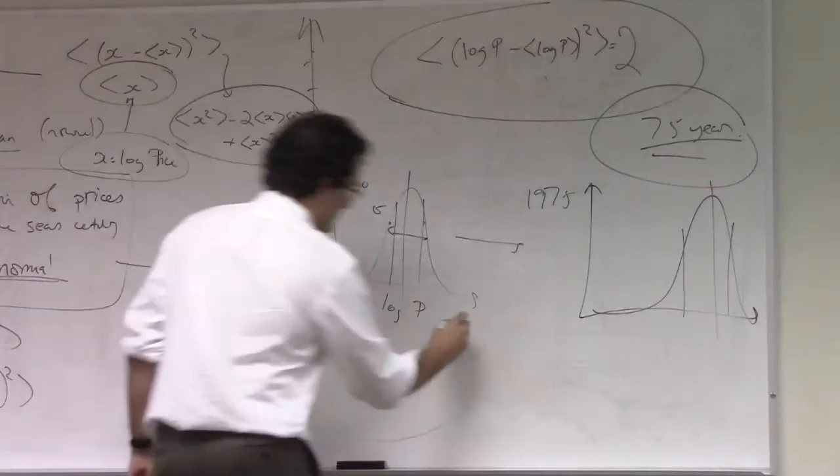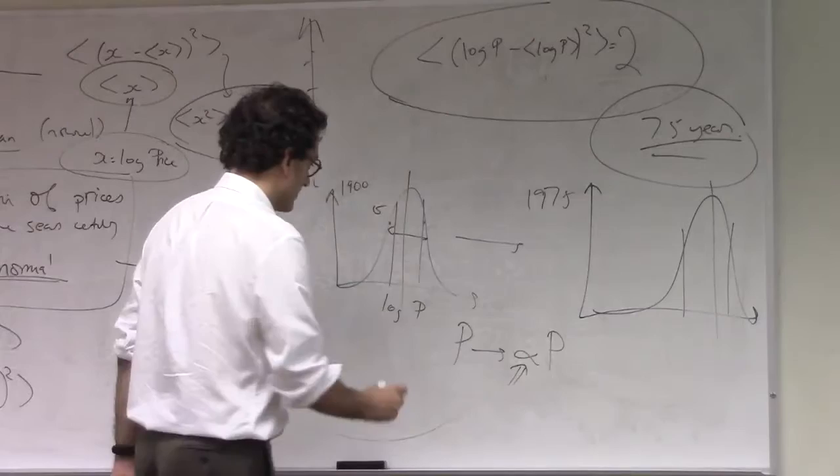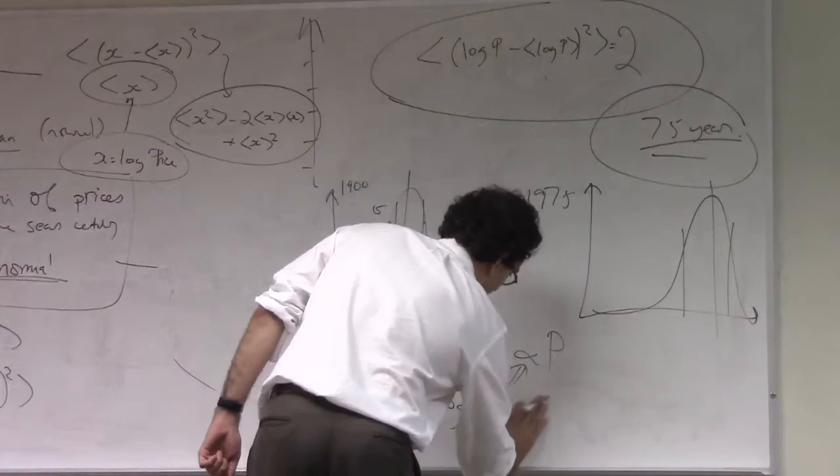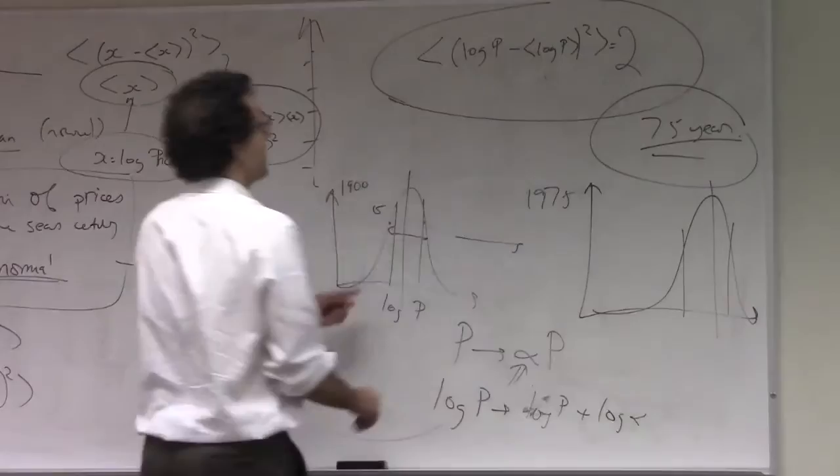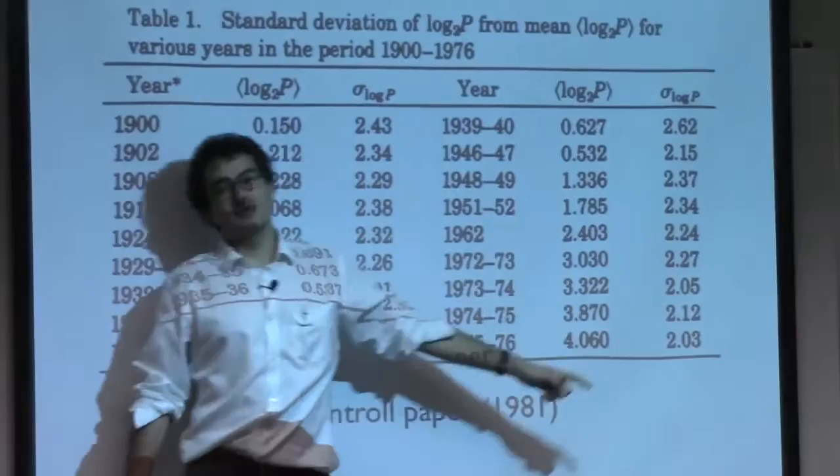So if every price, p, was multiplied by the same factor, alpha, then, of course, every log price, log p, is simply added to log alpha. So you would expect the variance to stay constant in that very particular case, but otherwise, allowing for the natural drift of goods, and in particular, allowing for different rates of inflation.